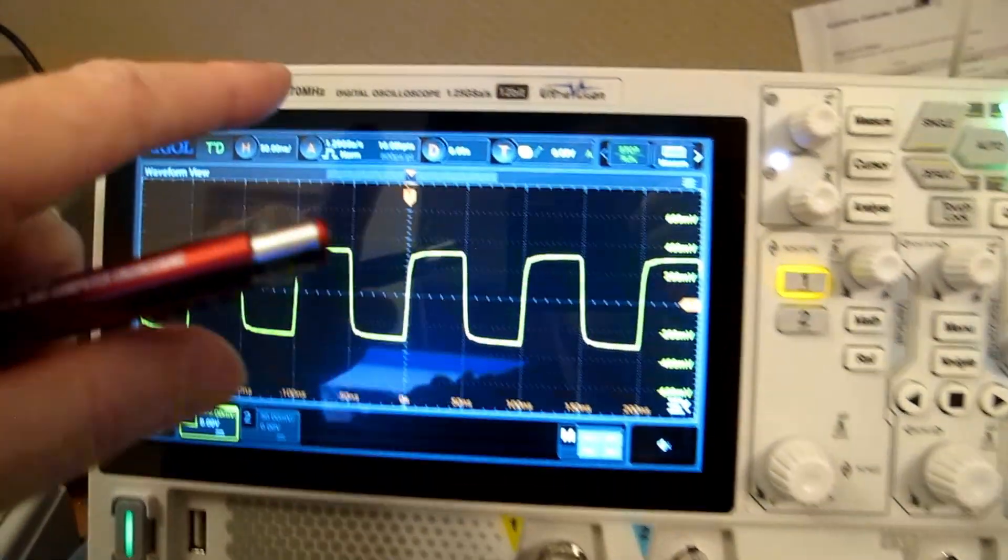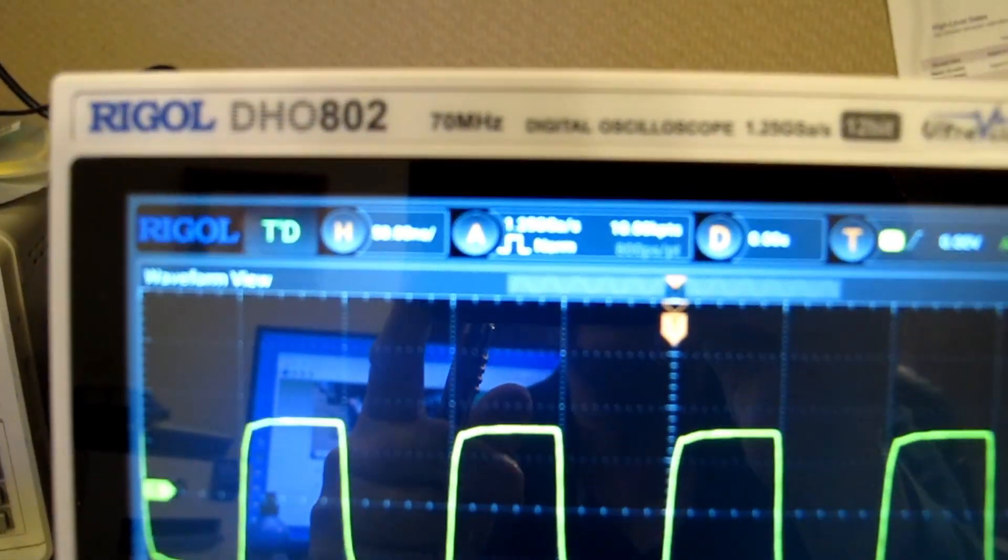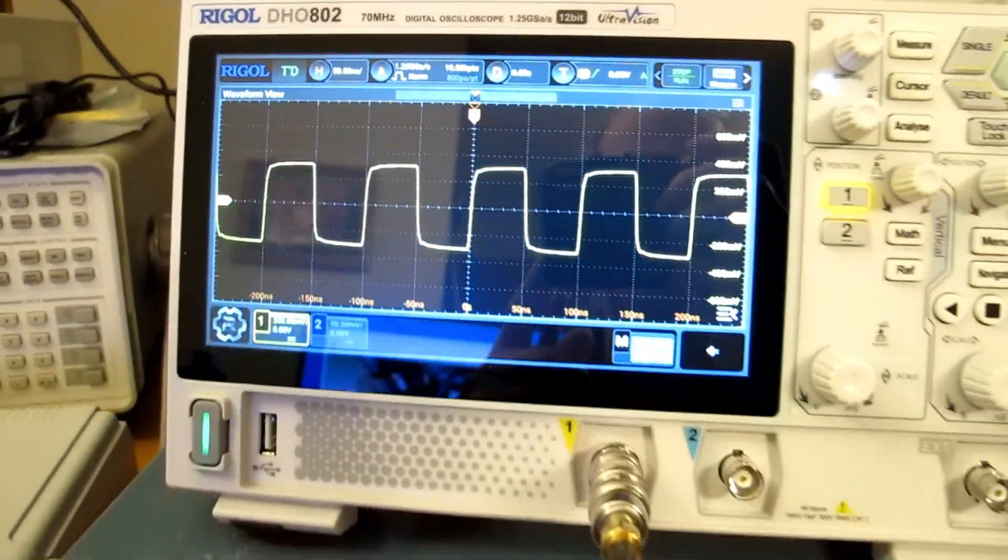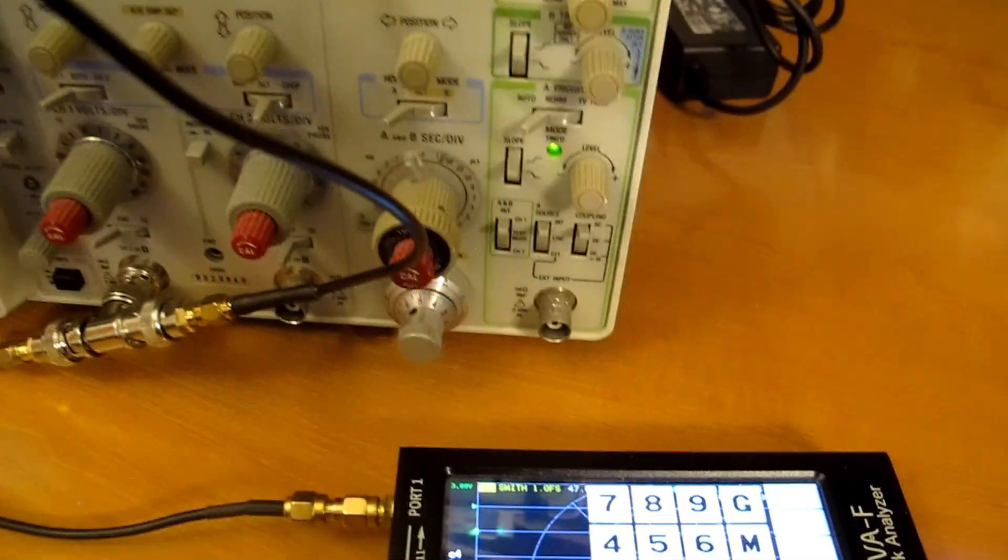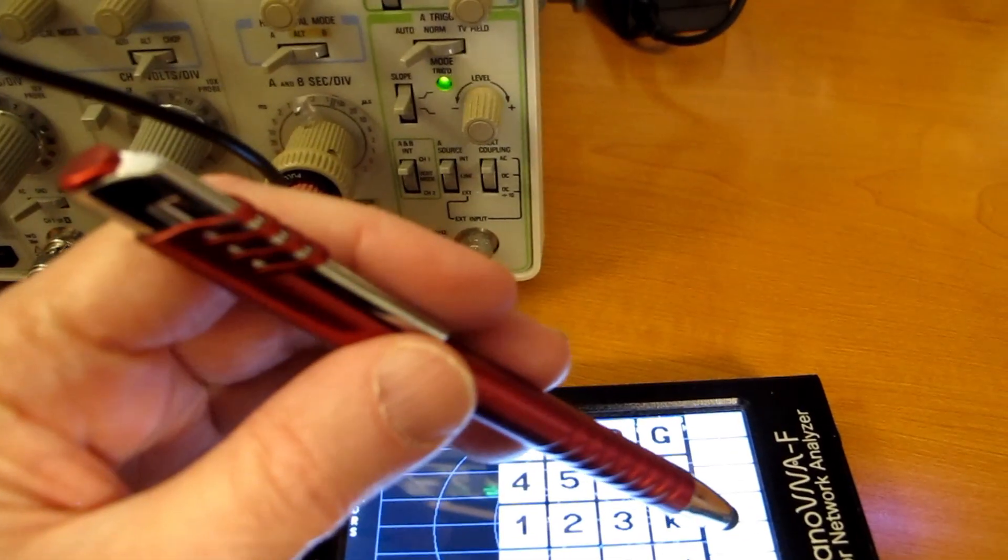Now this is a 70 megahertz scope, at least that's what's on the nameplate up there. Let's see what happens when I switch this to a 70 megahertz CW signal.